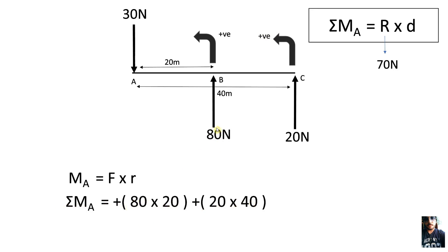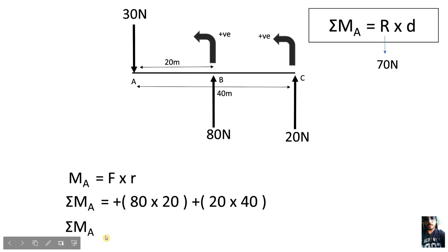So 80, because the force is 80N, times 20, because it is at a distance of 20 meters. And the force is 20N at a distance of 40 meters. Because these two moments are anticlockwise, they give a positive moment. On solving this, the net moment is positive 2,400 Nm.